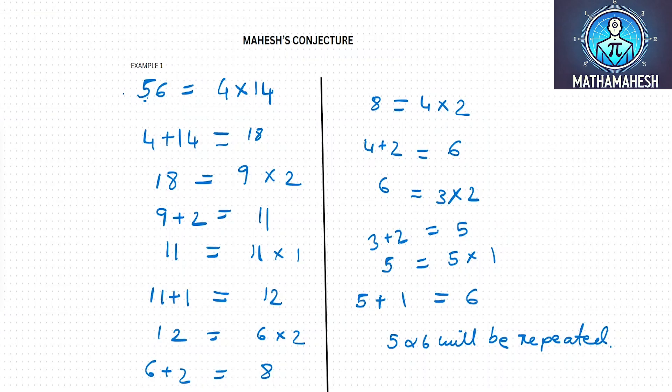Take the number 56. The factors of 56 are 4 and 14. When you add 4 and 14, you get 18. 18 can be factorized as 9 into 2. Now take those factors 9 and 2 and add them. You end up with 11.